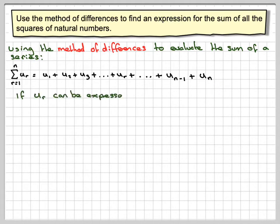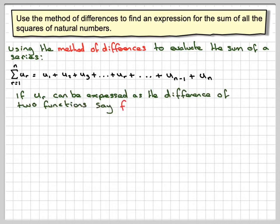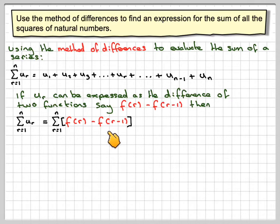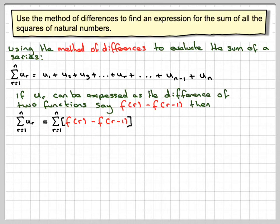If u_r can be expressed as the difference of two functions, say f(r) minus f(r-1), then the sum from 1 to n of u_r will become the sum from 1 to n of f(r) minus f(r-1). You don't have to use f(r) minus f(r-1); you could use something like f(r+1) minus f(r). This is not fixed in stone — it just means the difference needs to come out to be u_r, or some multiple of it.